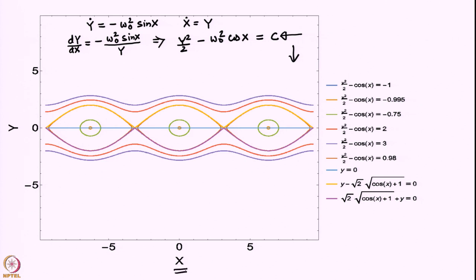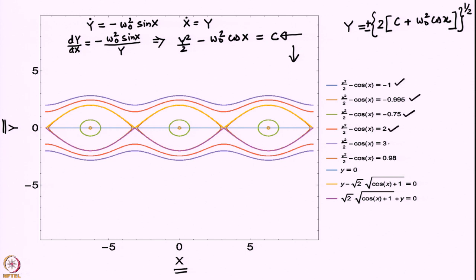The x-axis is the horizontal axis and the y-axis is the vertical axis. Writing the equation explicitly gives a ± square root form, so for any value of C you get two curves — one in the upper half plane and one in the lower half plane. These are the phase space trajectories; for each value of C we get one phase space trajectory.